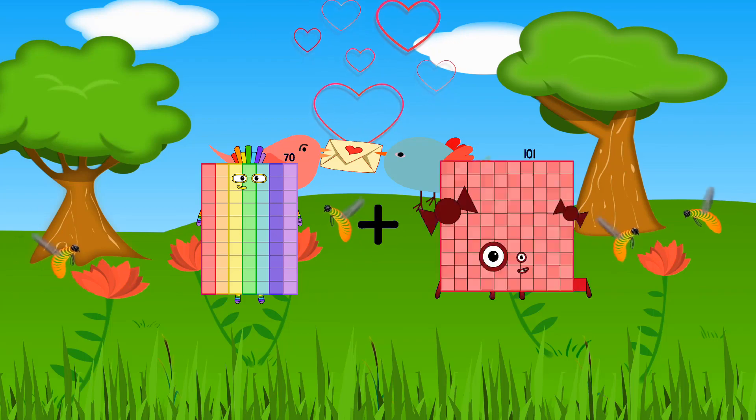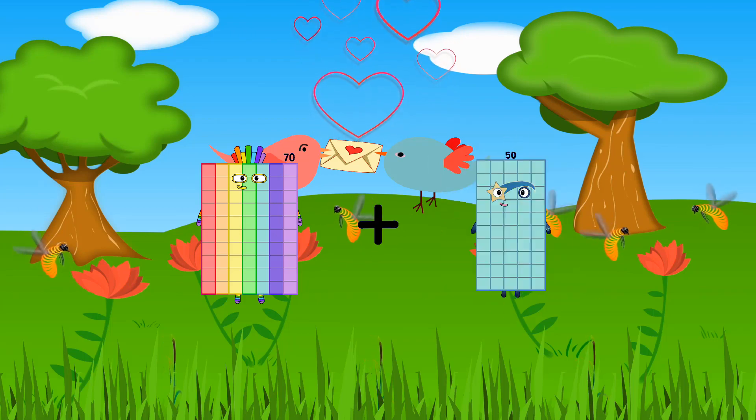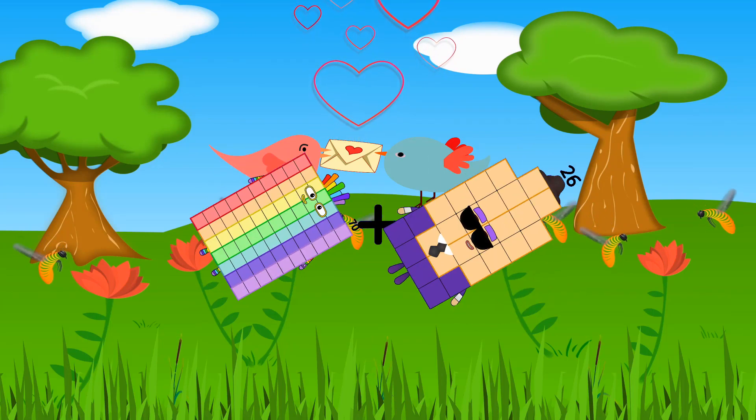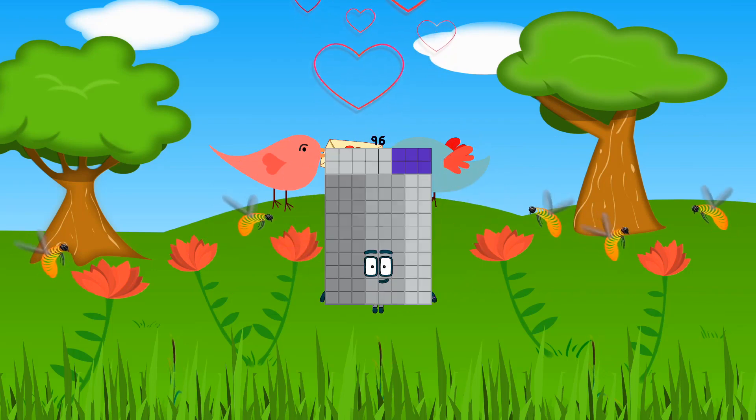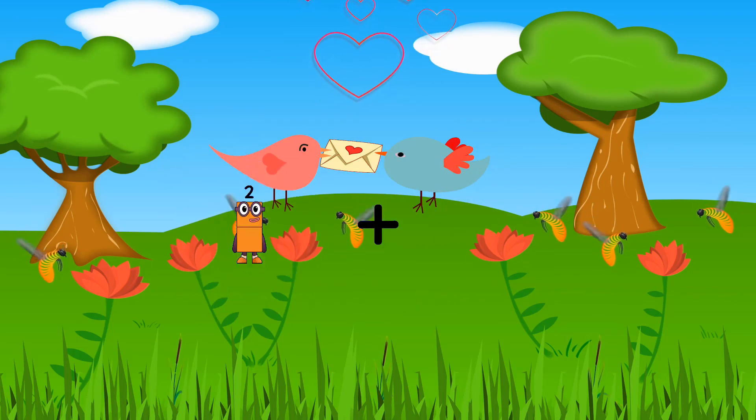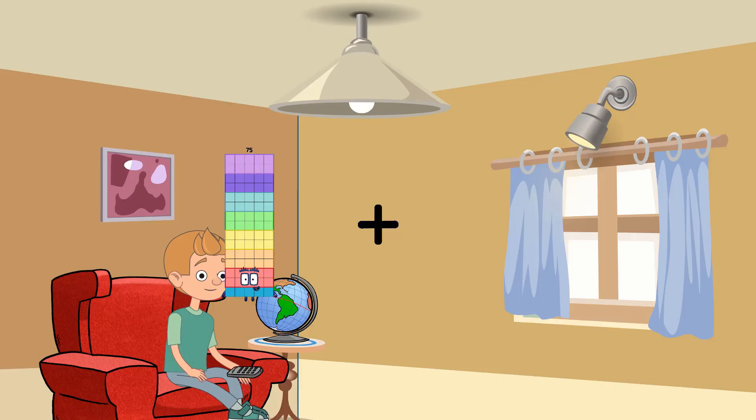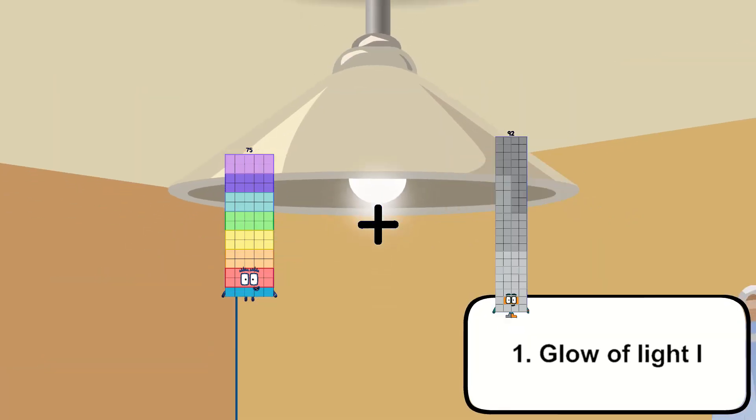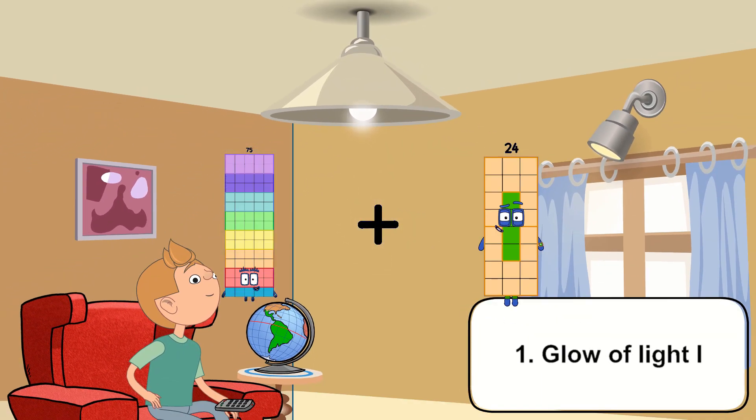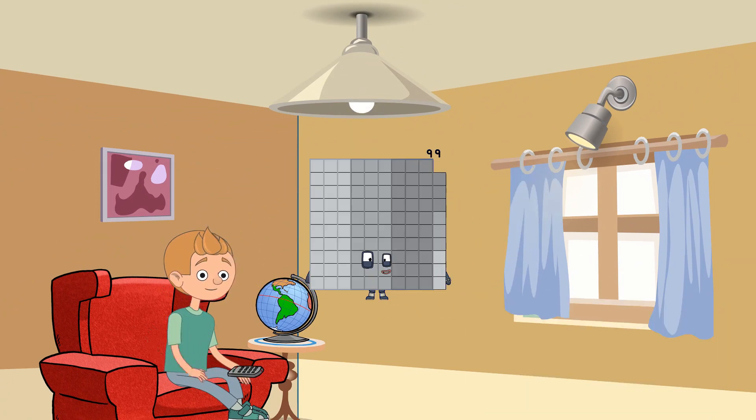70 plus 26 equals 96, 75 plus 24 equals 99.